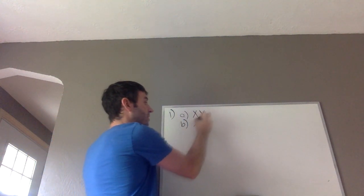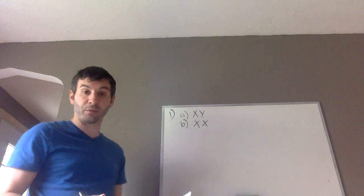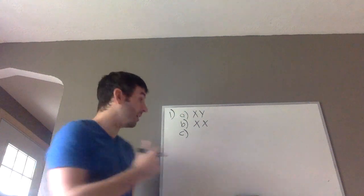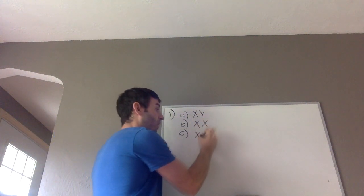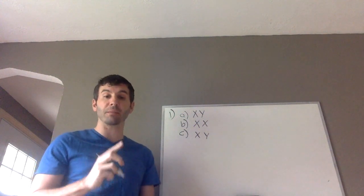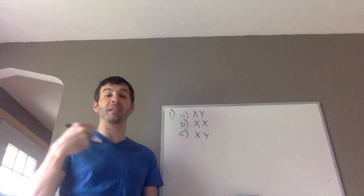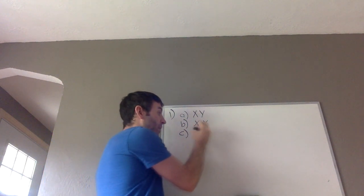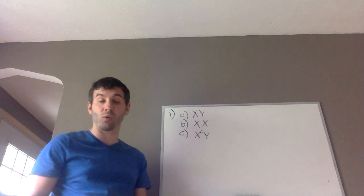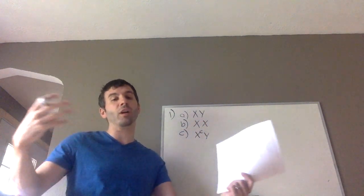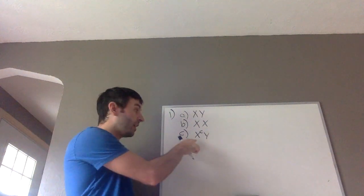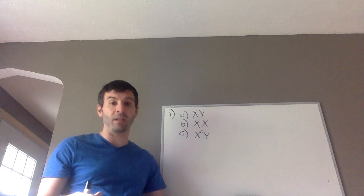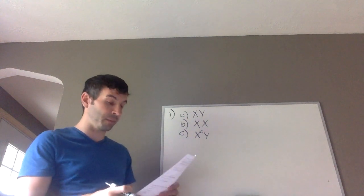Females have two X chromosomes, so they're XX. Now, a colorblind male — I still have an X and a Y chromosome. The difference is my X chromosome has a mutation on it. To indicate that, I'm going to put a C in the top right-hand corner. That C essentially stands for the colorblindness allele — that allele on my X chromosome is messed up, mutated, which is why I have colorblindness.